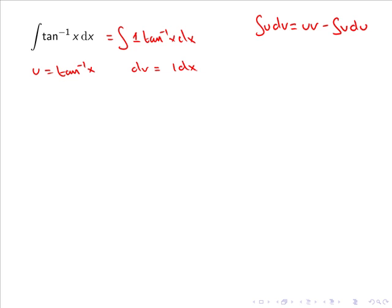Now we differentiate u: du/dx equals the derivative of tan inverse x, which gives 1 over 1 plus x squared. Multiplying across by dx, we have du equals 1 over 1 plus x squared dx.